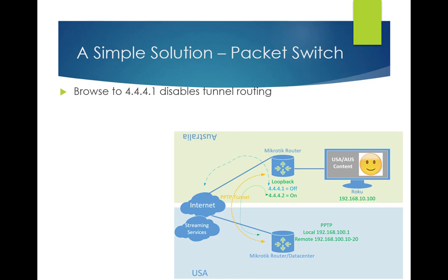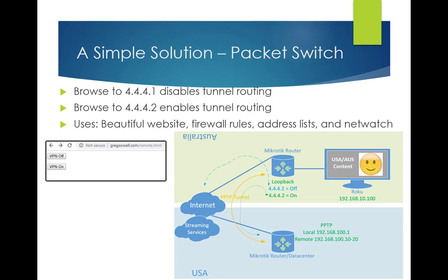My simple solution — I'm calling it a packet switch. I've got some magic in the router so that if I browse to 4.4.4.1, it will turn that route rule off, so none of the Roku traffic will go over the tunnel — it'll just go straight to the internet. If I browse to 4.4.4.2, it will turn that rule back on and traffic will go across the tunnel to the US. I'm using a simple webpage: VPN off hits 4.4.4.1, VPN on hits 4.4.4.2. These kick off firewall rules that use address lists and netwatch in combination.